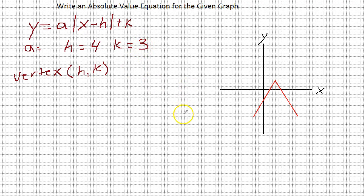Now to find a, think of a as like the slope of the line. So we go from this point to this point, we go down 1, 2, 3 over 2. Down 3 over 2, so it's 3 over 2.